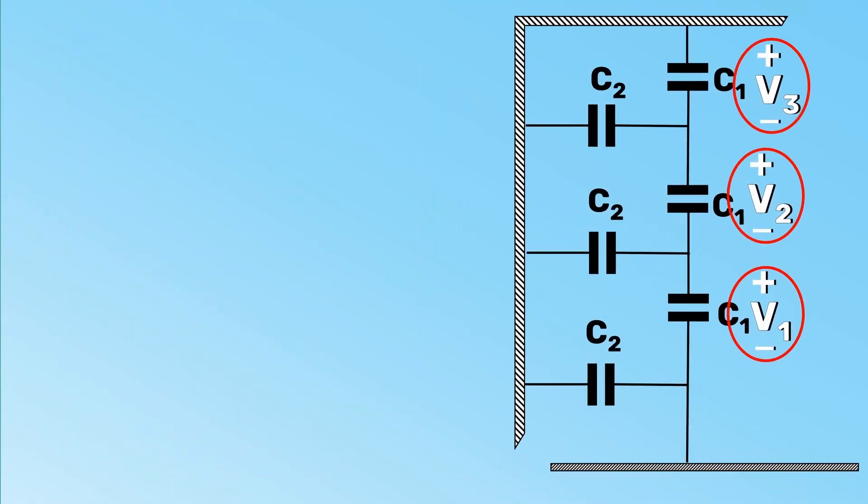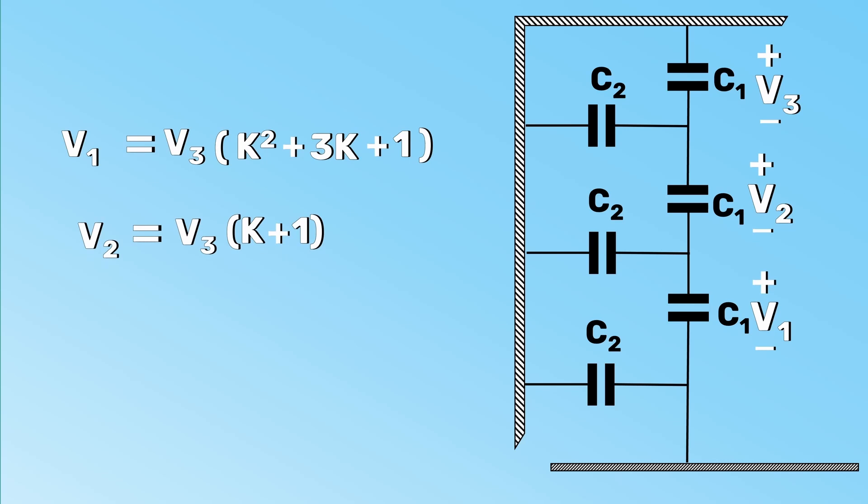the voltage across the disc are given by V1 equals V3 times K squared plus 3K plus 1, and V2 equals V3 times K plus 1, where K is the ratio of shunt capacitance to self-capacitance.